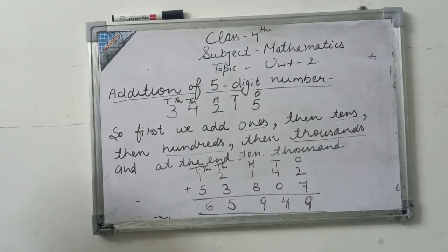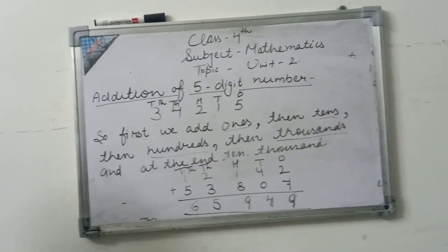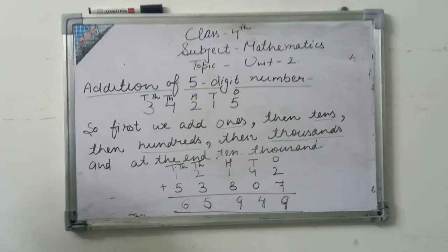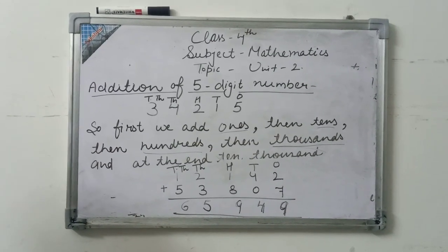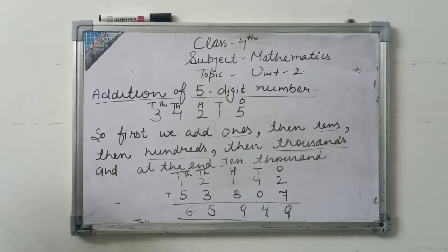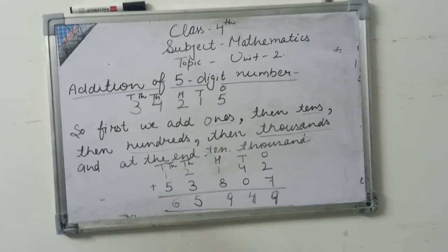Okay? This is how we will do addition. We will start from right hand side. Firstly, we will add 1st place. After then 10th, then 100th, then 1000th, then 10,000th. Clear?